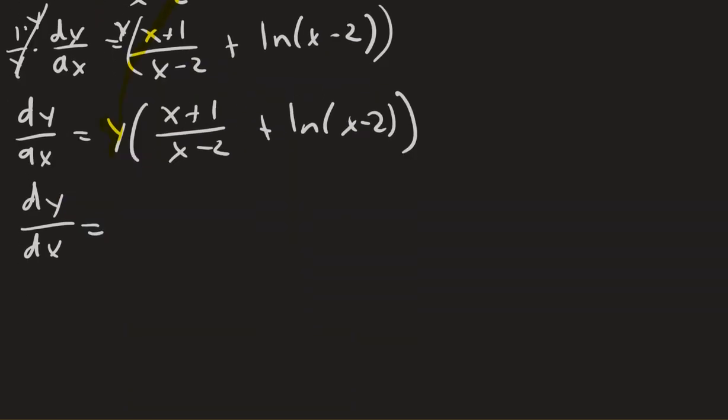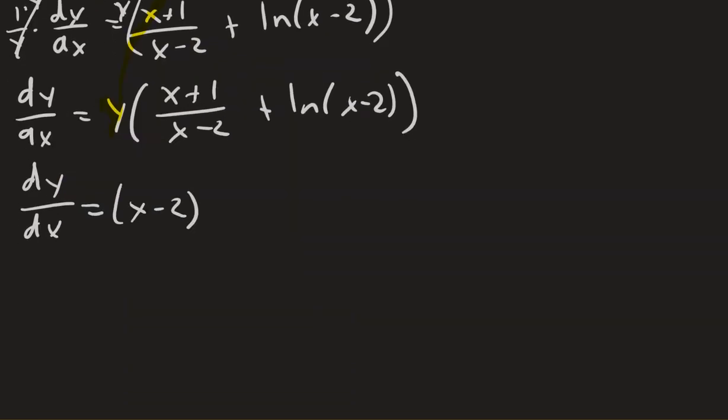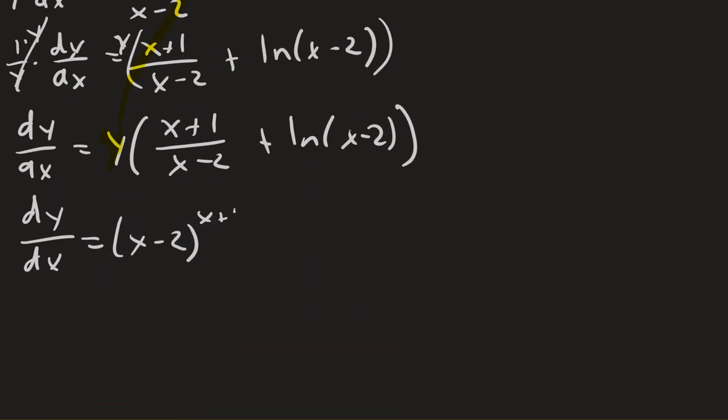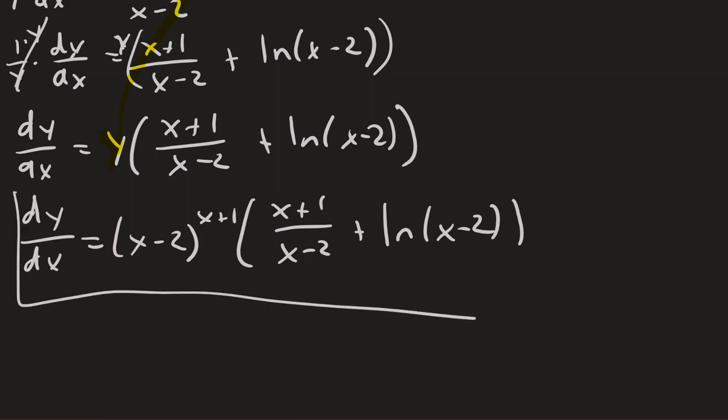Y is x minus 2 to the power of x plus 1. Just bring down the rest of it. And now we have solved for dy dx. So there's our solution.